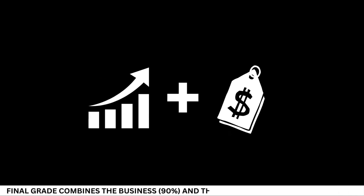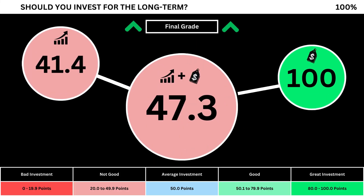Finally, we can put everything together to get the company's final grade. Adding the business grade and the fair price grade, we can see the company's final grade. Anything less than 50 means it's not a good long-term investment. A final grade above 50 means it would make a good long-term investment if you bought the stock right now. So what are your thoughts? Are you going to invest? Invest wisely, and as always, take care of your money.